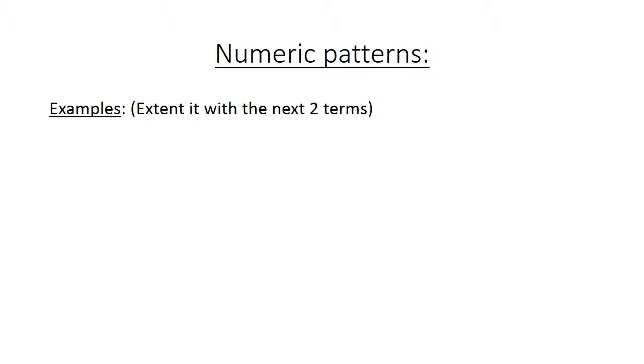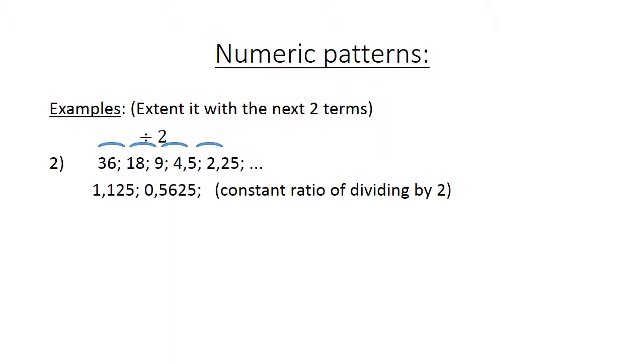Numeric patterns: Extended with the next two terms. We first look at the pattern 18, 9, 4.5, 2.25. Now we can see we divide by 2. 18 divided by 2 equals 9, 9 divided by 2 equals 4.5, 4.5 divided by 2 equals 2.25. So the next one will be 2.25 divided by 2 equals 1.125 divided by 2 equals 0.5625. A constant ratio of dividing by 2.